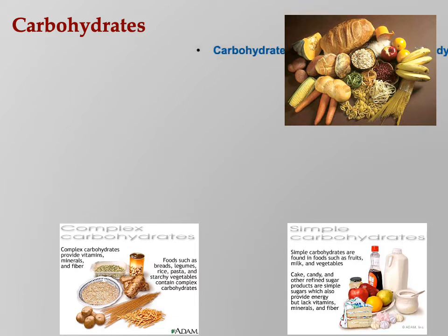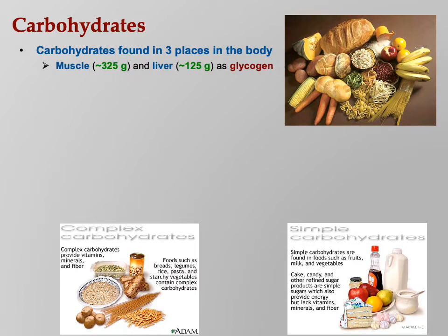Let's look at carbs. Carbs are found in three places in the body. Glycogen is the stored form of glucose — plants store glucose as starch, animals store glucose as glycogen. You have around 325 grams in your muscles and 125 in your liver. The glycogen in your muscles can only be used by those muscles, whereas glycogen in the liver can be converted back to glucose and dumped into the bloodstream.